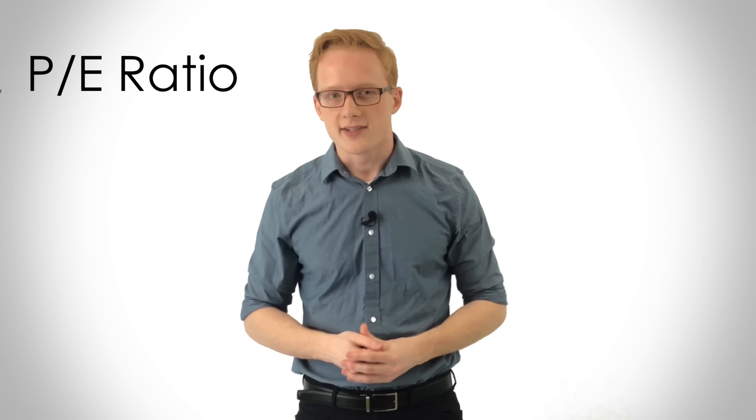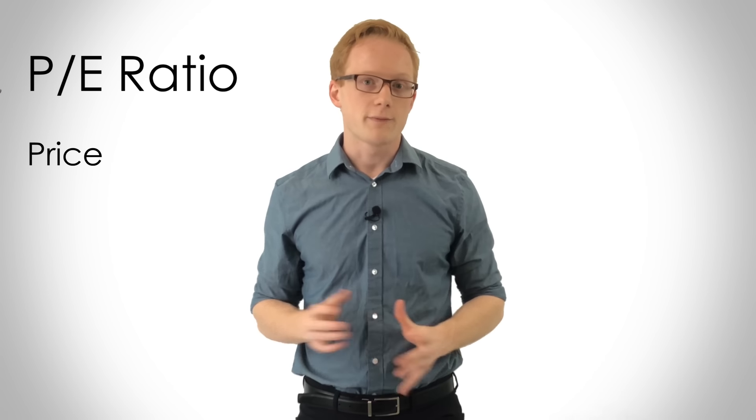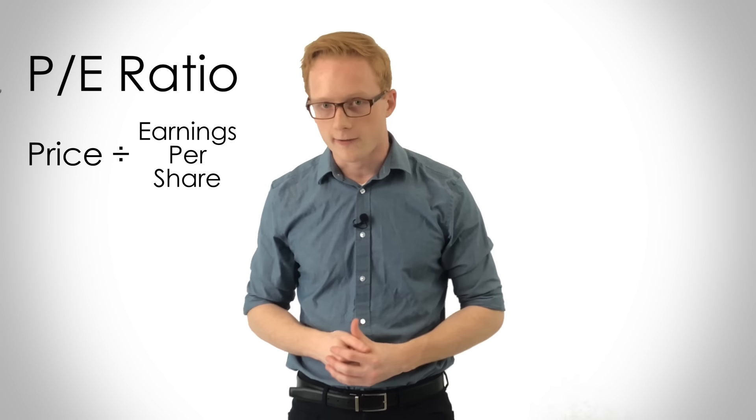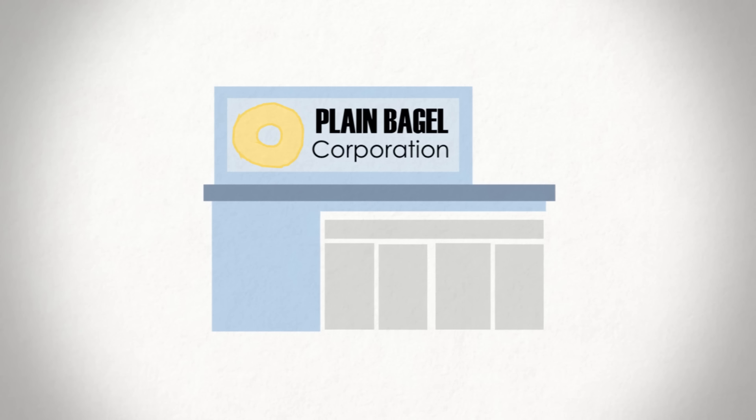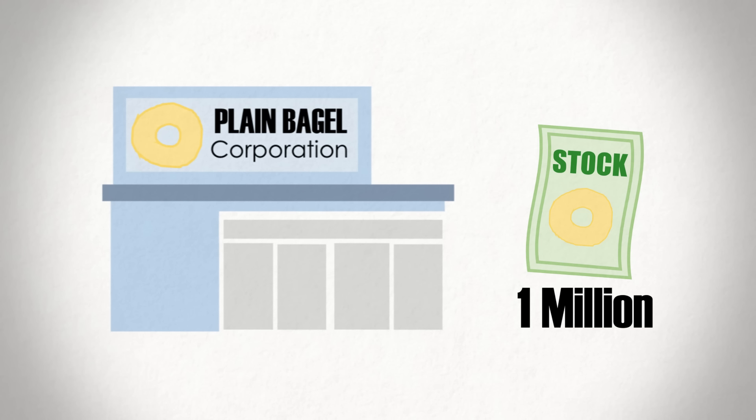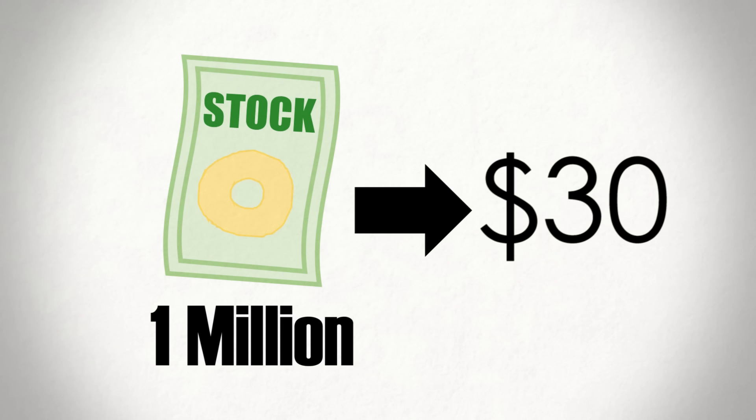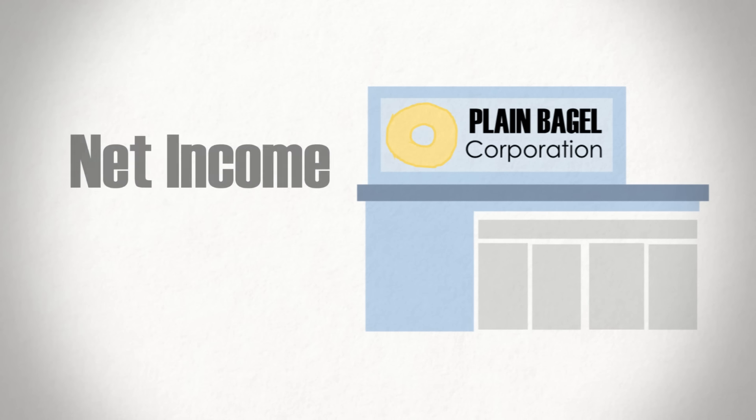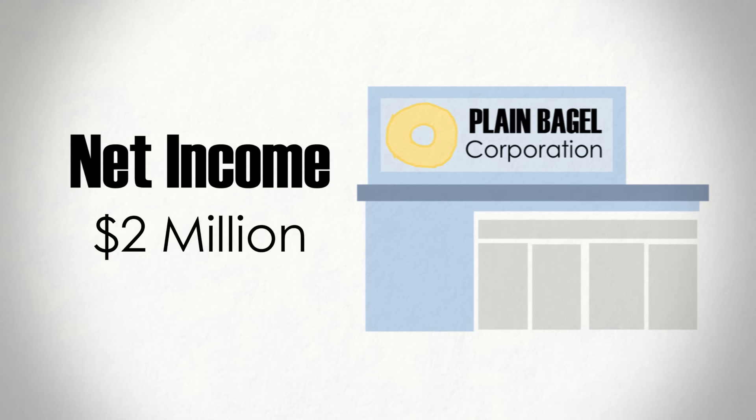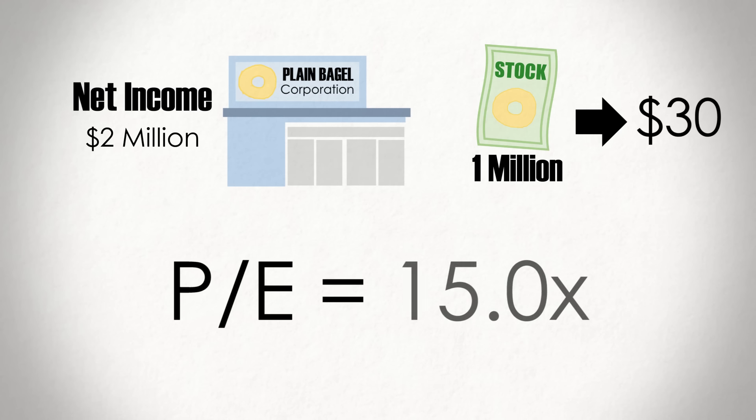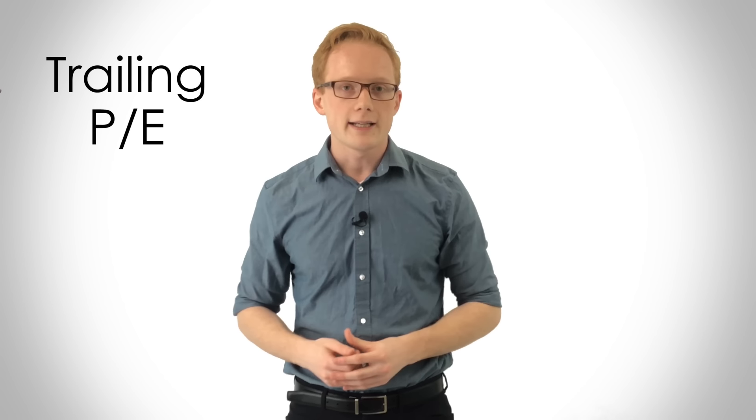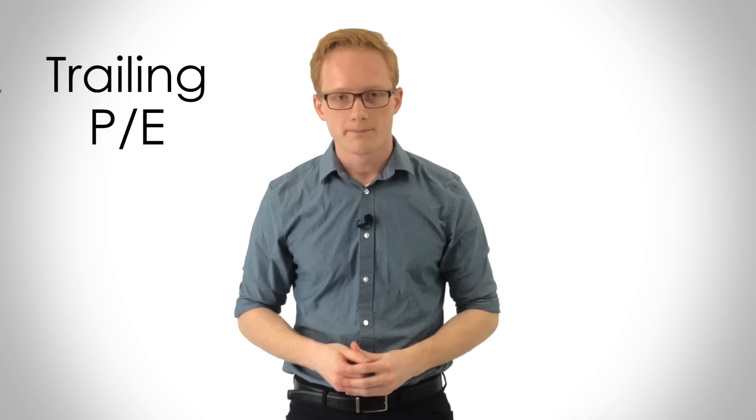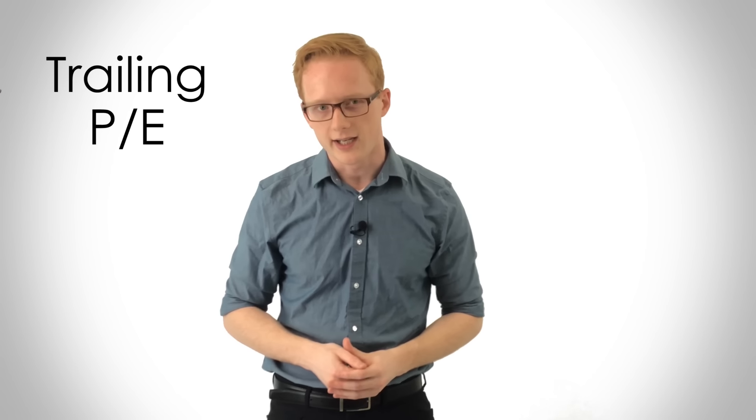It's easy enough to calculate since you take the stock's price and divide it by the company's earnings per share. For example, if Plain Bagel Co. had 1 million shares outstanding, each of which were trading at a price of $30, and last year their net income was $2 million, the stock's P-E ratio would be 15 times. This P-E ratio is known as a trailing P-E, because we're calculating it using historical information. And it's one of the easiest multiples to understand.